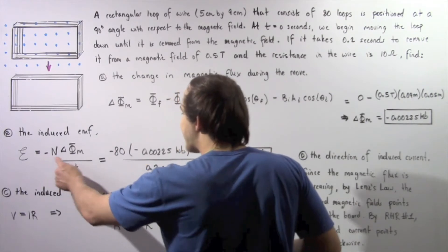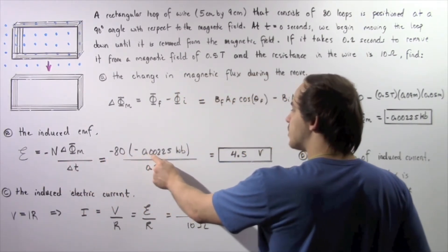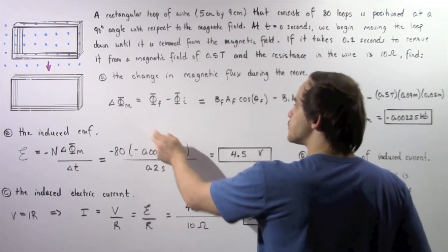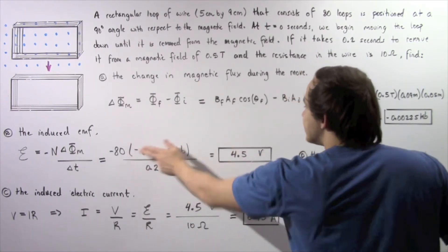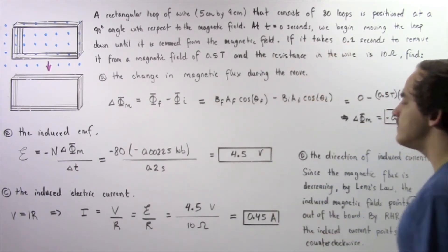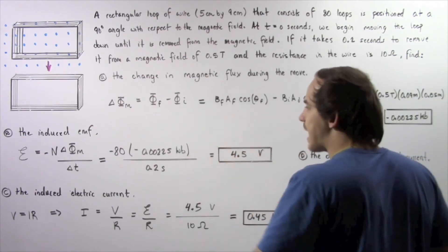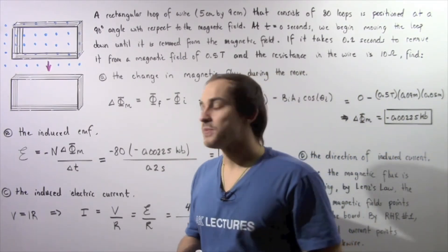So we have negative 80 multiplied by negative 0.00225 Webers which was found in part A divided by a time of 0.2 seconds and that gives us a voltage of 4.5 volts. So this is our induced EMF.